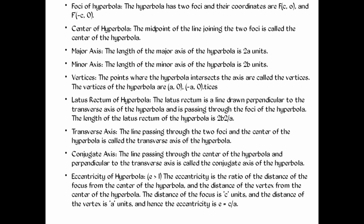Now let's talk about the parts of the hyperbola. The hyperbola has two foci, and their coordinates are F(c, 0) and F(−c, 0). The midpoint of the line joining the two foci is called the center of the hyperbola. The length of the major axis of the hyperbola is 2a units.